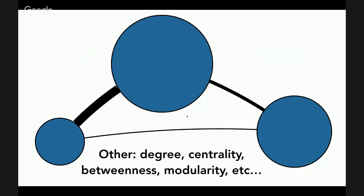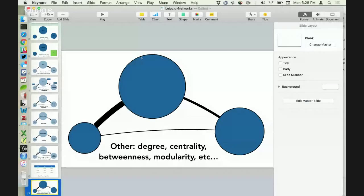There are all kinds of other things we can talk about — things like degree, centrality, betweenness, modularity — all very fun network science terms. But I tend to think it's easier to talk about those while actually working through a network. So I'm going to come out of Keynote and move over to Gephi to walk through bringing in some simple network data.